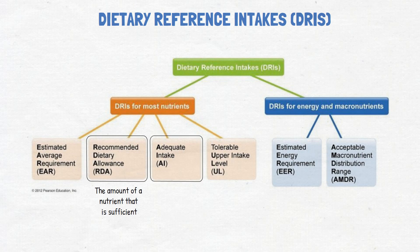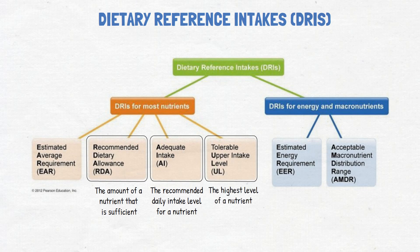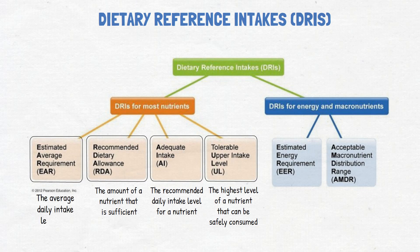Second is adequate intake, or AI — the recommended daily intake level for a nutrient when there is not enough scientific evidence to establish an RDA. Third is the tolerable upper intake level, or UL — the highest level of a nutrient that can be safely consumed without the risk of adverse health effects. And finally is the estimated average requirement, or EAR — the average daily intake level of a nutrient estimated to meet the requirements of half of the healthy individuals in a specific age and gender group.